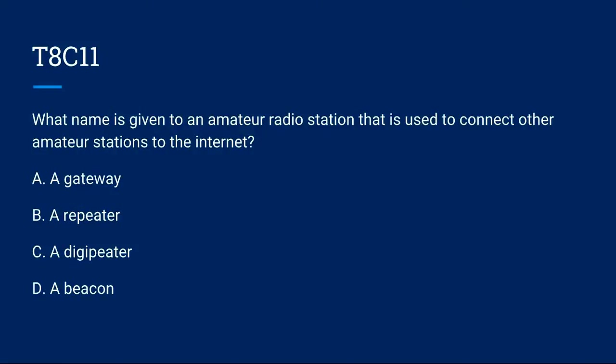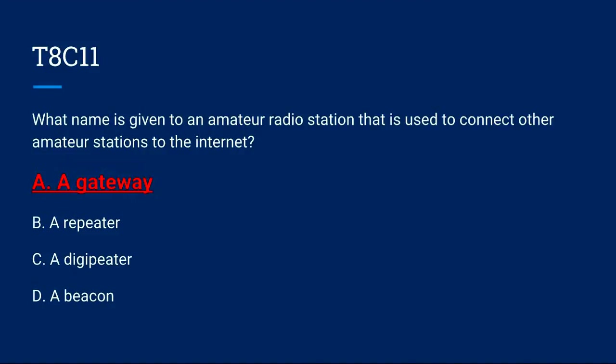T8C11: What name is given to an amateur radio station that is used to connect other amateur stations to the internet? A. A gateway. B. A repeater. C. A digipeater. Or D. A beacon. The correct answer is A: a gateway.